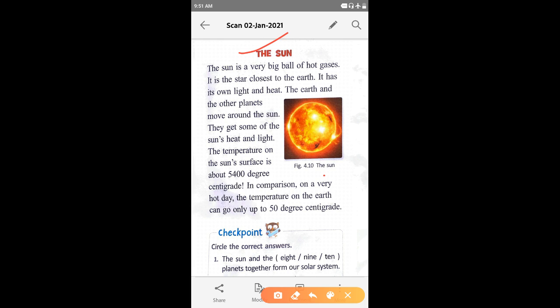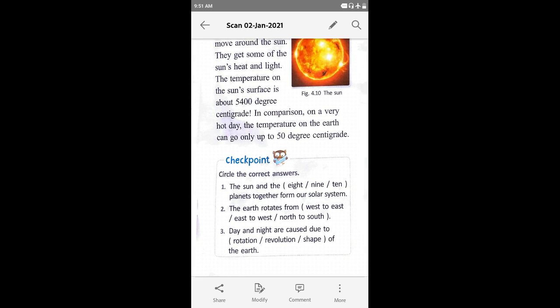Next is your checkpoint. Circle the correct answers. The sun and the eight, nine, ten planets together form our solar system. Sun aur eight, nine, ten planets together form our solar system.